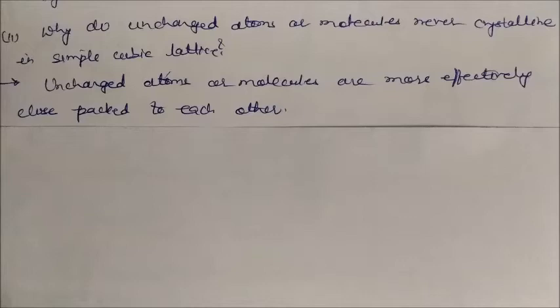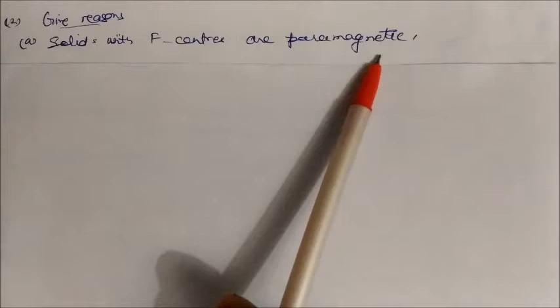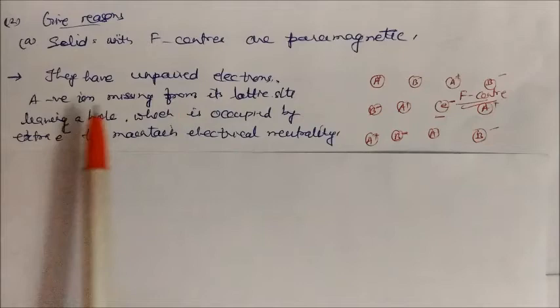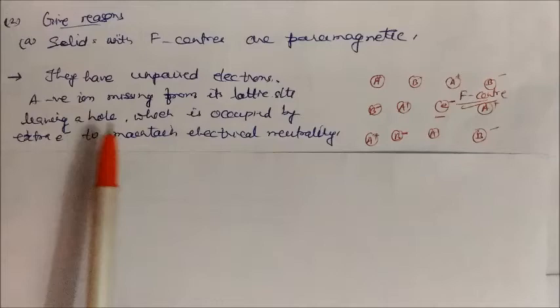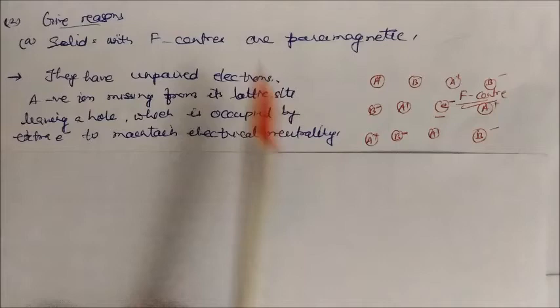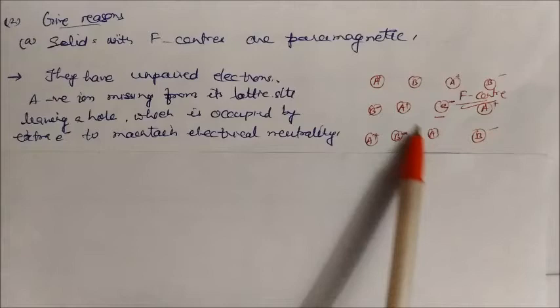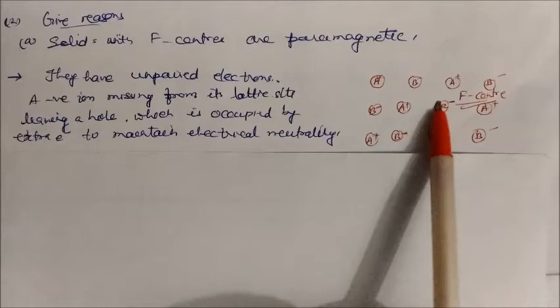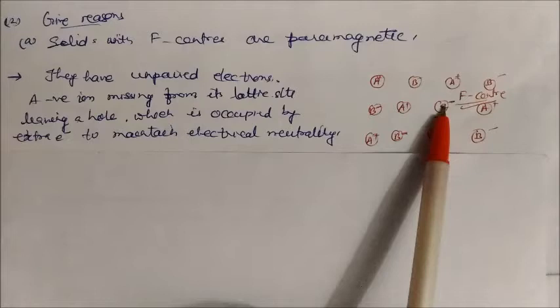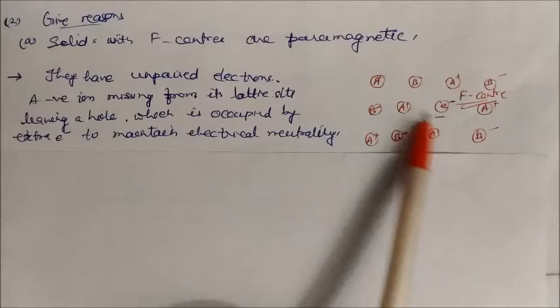Give reasons why solids with F-centers are paramagnetic in nature. These solids have unpaired electrons: an anion (negative ion) is missing from its lattice site, leaving a hole, which is then occupied by an extra electron to maintain electrical neutrality. In the crystal lattice, when a B-minus anion is lost, an electron occupies that space — this is called the F-center. Because this F-center electron is unpaired, the solid becomes paramagnetic.